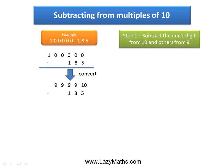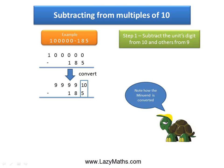Now it's very easy to subtract the 185 from 9, 9, 9, 9, and 10. 10 minus 5 is 5.